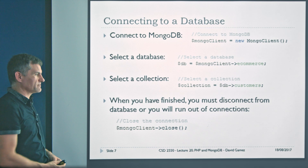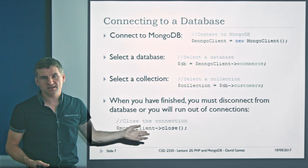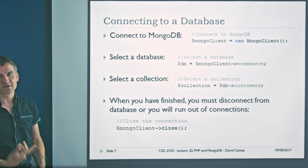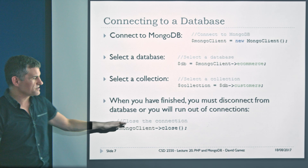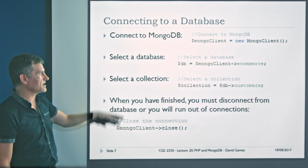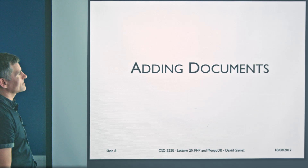At the bottom of all your scripts, you should always disconnect from the database or you're going to run out of connections. MongoDB will support maybe 100 connections. If you don't close the connection and run the same script 100 times, you're going to have 100 open connections, and the 101st script that tries to connect will fail. So you must close the connection at the end of each script, otherwise your PHP is going to stop working with MongoDB.